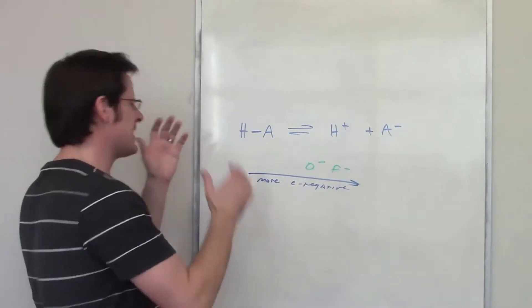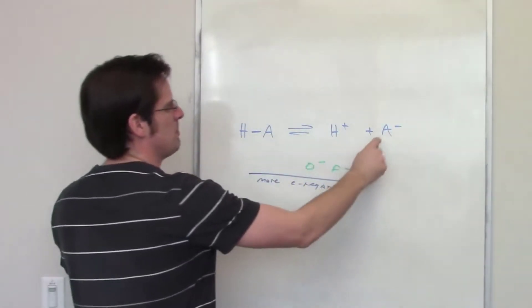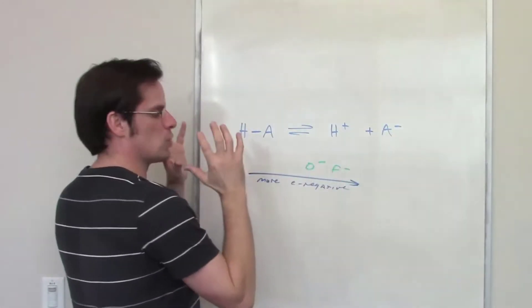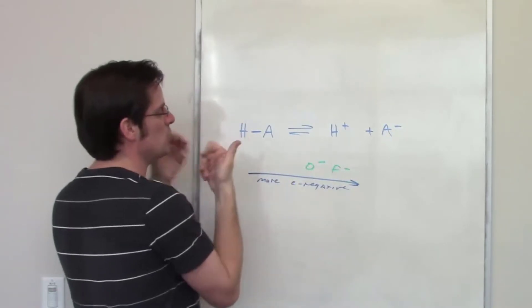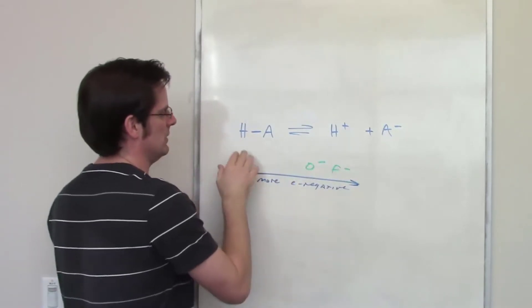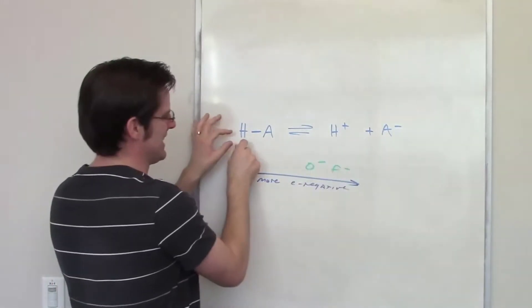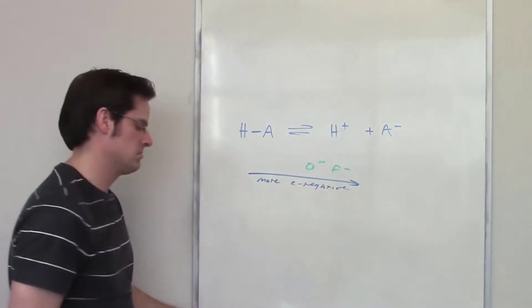The stability of A⁻ directly determines how easy it is to lose a hydrogen. If A⁻ is very, very stable, it's easy for HA to shed a hydrogen and become A⁻.